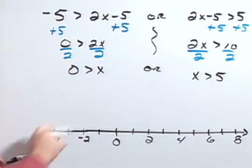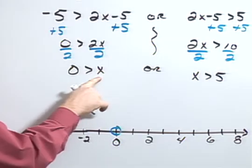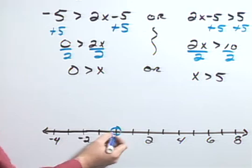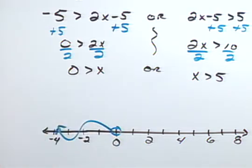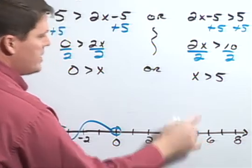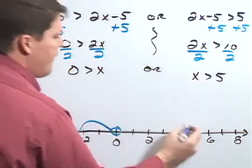Graphing these, I'm going to have an open dot at 0, and since x in this case is less than 0, I'm going to shade to the left. And at 5, I'm also going to have an open dot because it's non-inclusive, and then x is greater than 5, so I'm going to shade to the right.